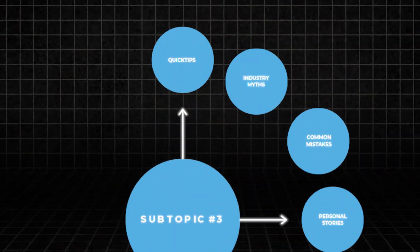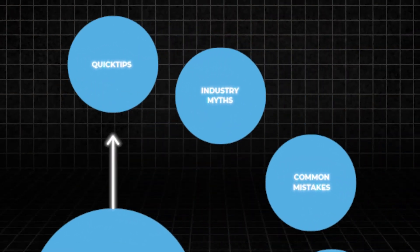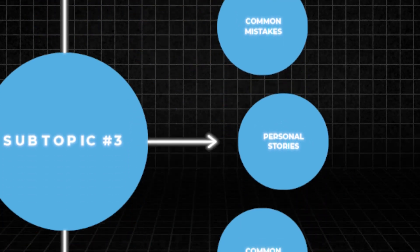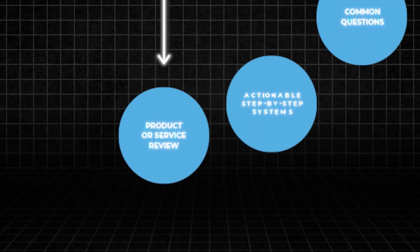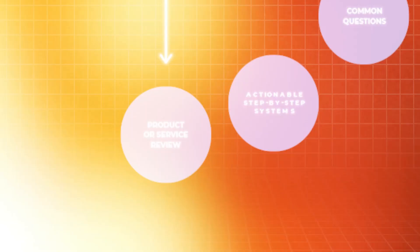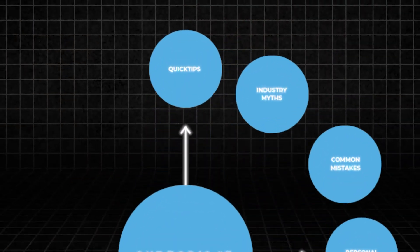These seven categories are: quick tips, industry myths, common mistakes, personal stories, common questions, actionable step-by-step systems, and a product or service review. The reason we're going to make a video around each of these seven categories is because these are very engaging and really interesting video topics to talk about within each subtopic. Let's dive a little bit deeper into each category because each one has its own benefits for your personal brand and delivers value in different ways to your audience.